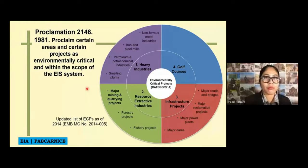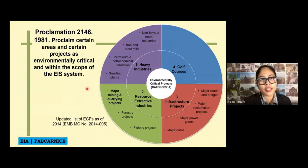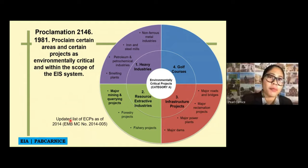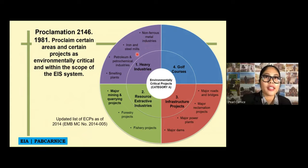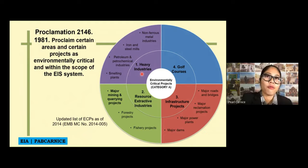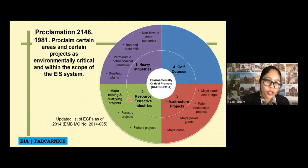Let's go now to Category A. Category A is based on Proclamation 2146 of 1981, which proclaimed certain areas and projects as environmentally critical and within the scope of the EIS system. This is based on the updated list of environmentally critical projects as of 2014. The projects under Category A include: Heavy Industries — such as non-ferrous metal industries, iron and steel mills, petroleum and petrochemical industries, and smelting plants. The second type is Resource Extractive Industries — for example, major mining and quarrying projects definitely need an ECC.